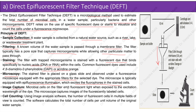Microbial cells on the filter emit fluorescent light when exposed to the excitation wavelength of the dye. The microscope captures images of the fluorescently labeled cells. Using image analysis software, the number of fluorescent cells in multiple fields of view is counted, and the software calculates the total number of cells per unit volume of the original water sample.